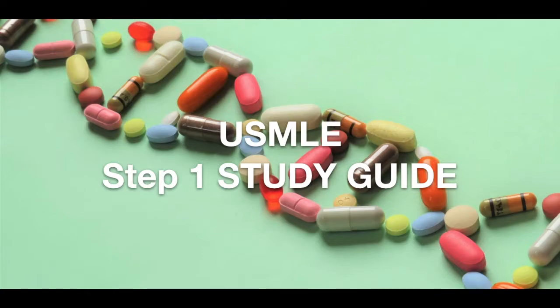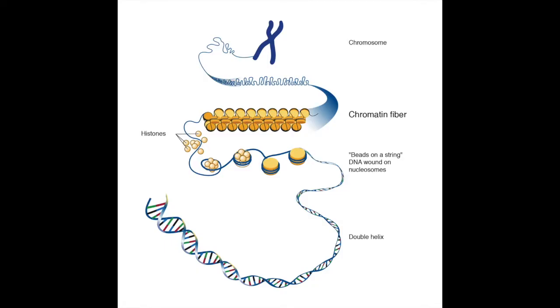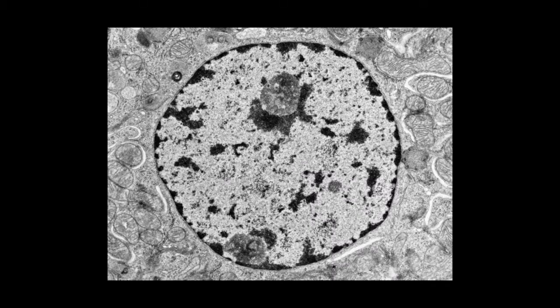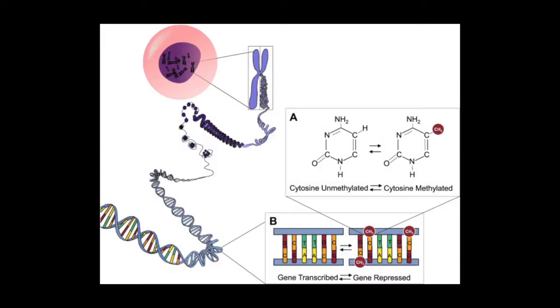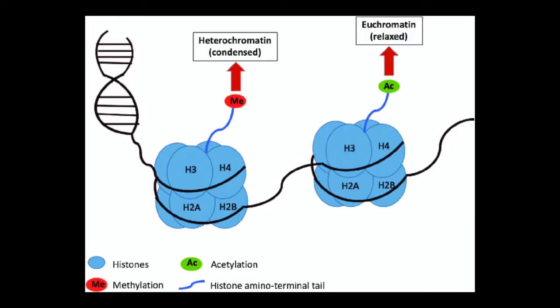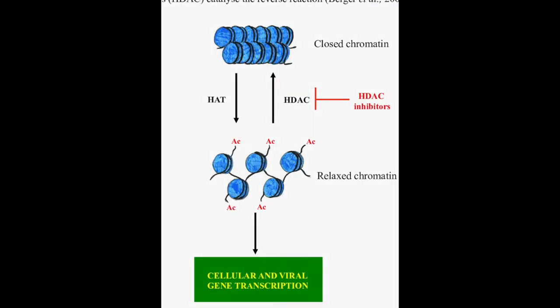Welcome to the Step 1 Review Study Guide. In this lesson, we learn about chromatin structure, the different types of chromatin, DNA and histone methylation, acetylation, and deacetylation.